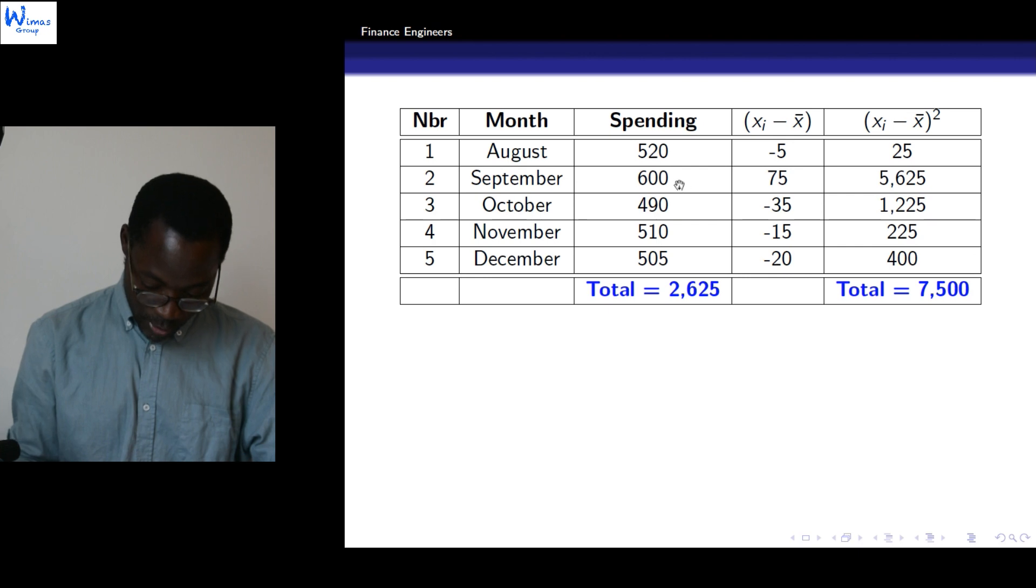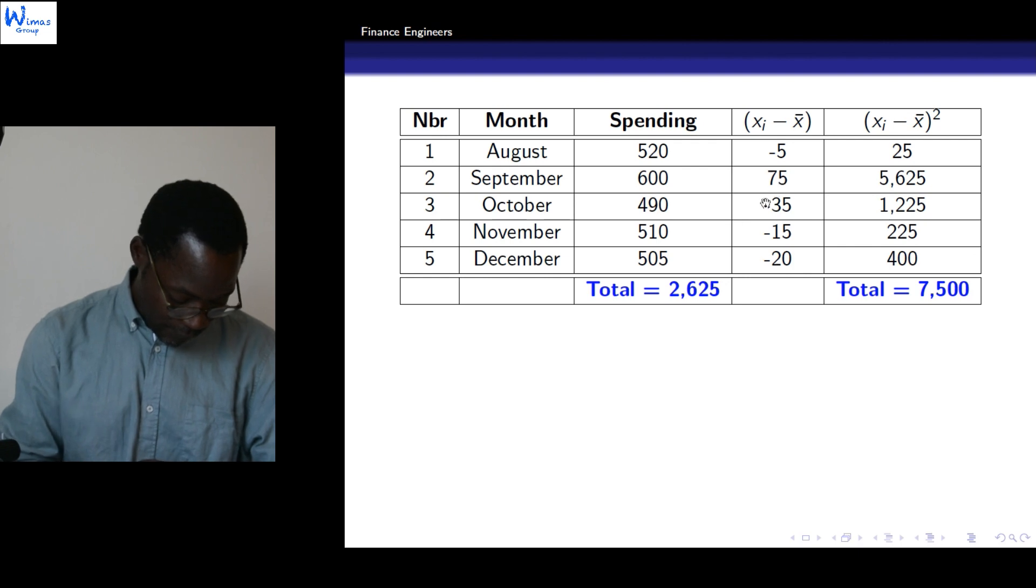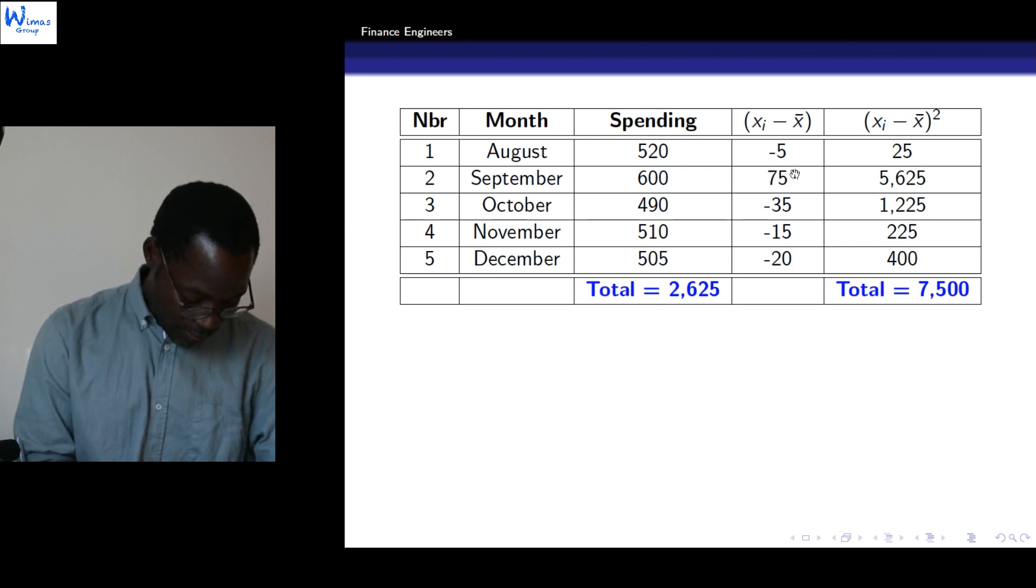Secondly, for 600 minus the mean we obtain 75. Next, 490 minus the mean becomes minus 35. Then minus 15, then minus 20. Computing the squares of all these differences, we will obtain 25, 5,625, 1,225, 225, and 400.